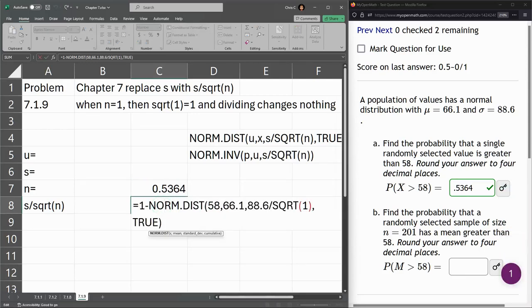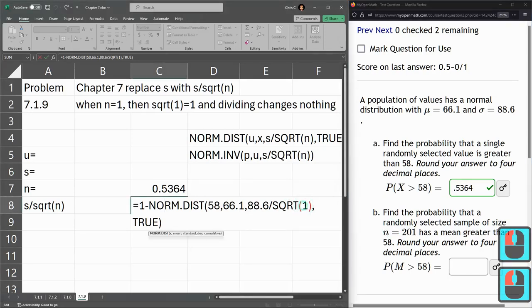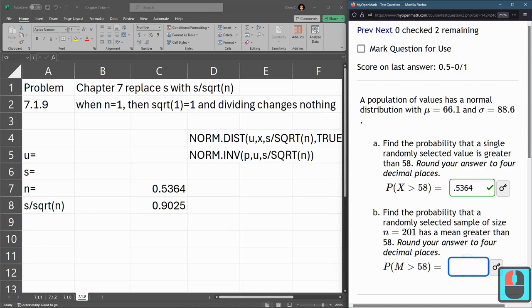Part B is everything is the same, except instead of a single value, we have 201 that we're selecting. So that's our n. So inside here is 201. And this made it go way up. So again, I did the standard deviation divided by the square root of n. Gave us that right there.